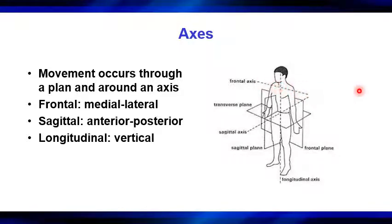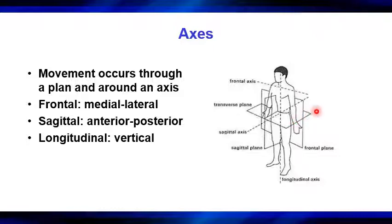Movement in the frontal plane — shoulder abduction, hip abduction, both forms of adduction, wrist ulnar and radial deviation — all occur in the frontal plane and rotate around the sagittal axis. The sagittal axis runs perpendicular to the frontal plane. If this person were to abduct their shoulder, bringing their arms straight up and around overhead, they'd be moving through the frontal plane and rotating around the sagittal or anterior-posterior axis.